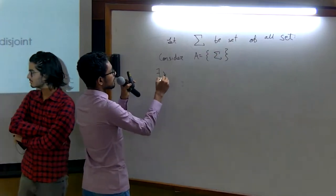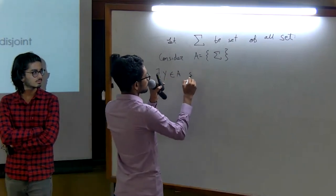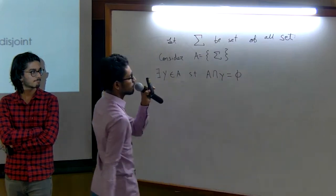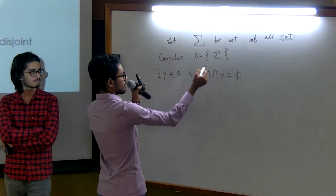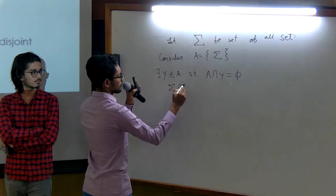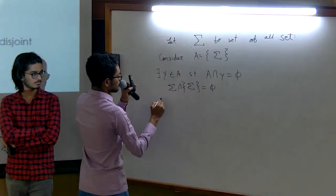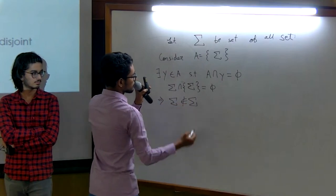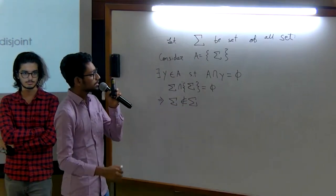We let sigma to be the set of all sets and consider the singleton set of sigma. Now there exists some element Y in A such that A intersect Y is a null set by regularity. But the only element here is sigma. So that implies that sigma does not contain sigma. So this proves that we cannot construct the set of all sets.